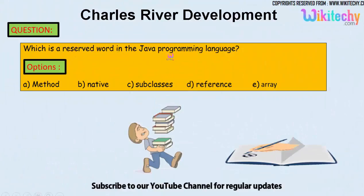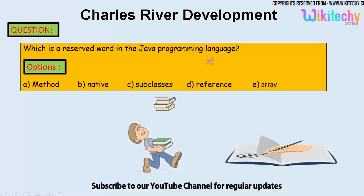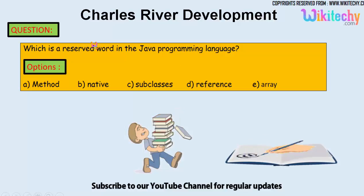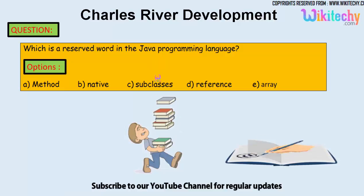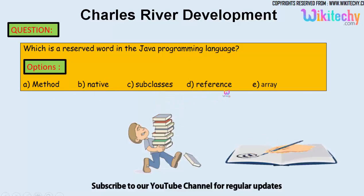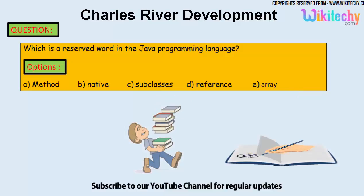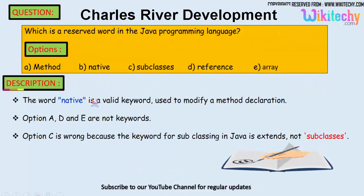The question is: which is a reserved word in the Java programming language? A reserved word — for example, 'int' — needs to be identified. The options are: method, native, subclasses, references, and array.